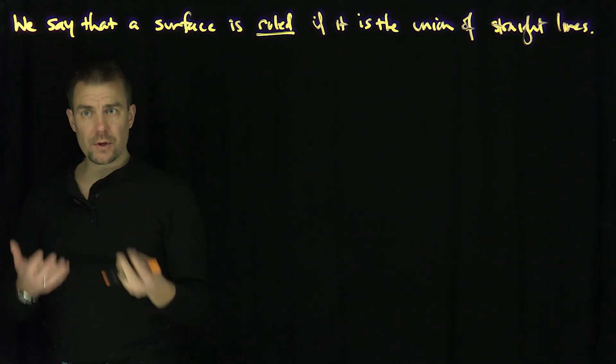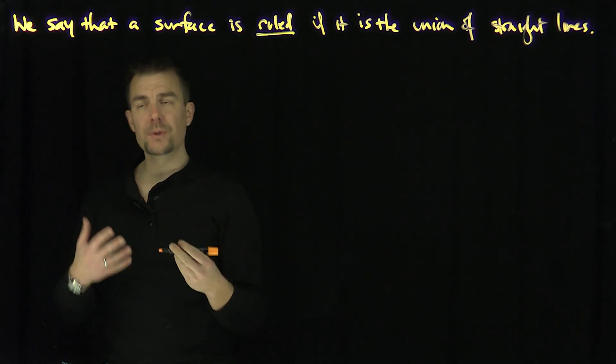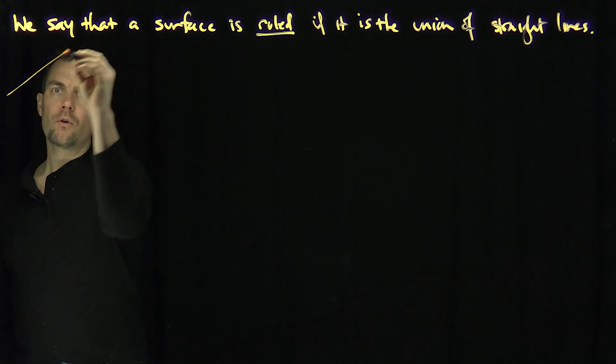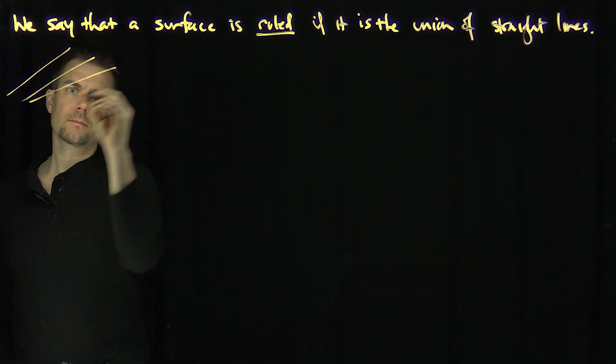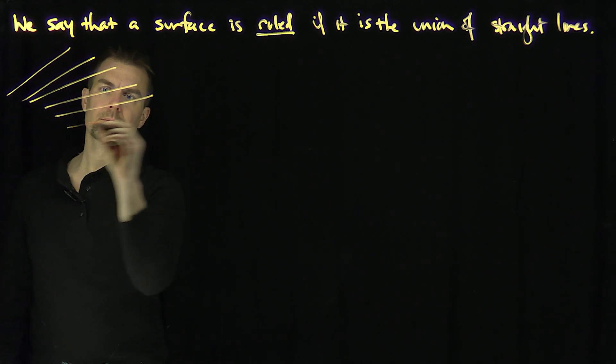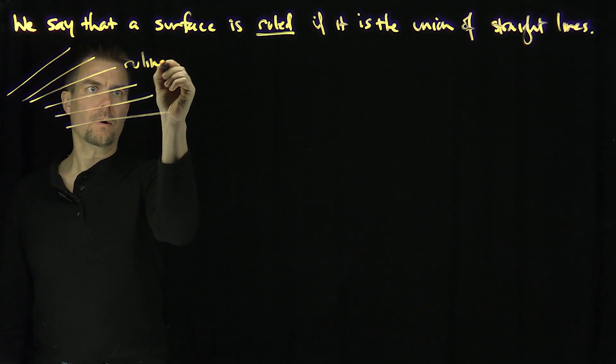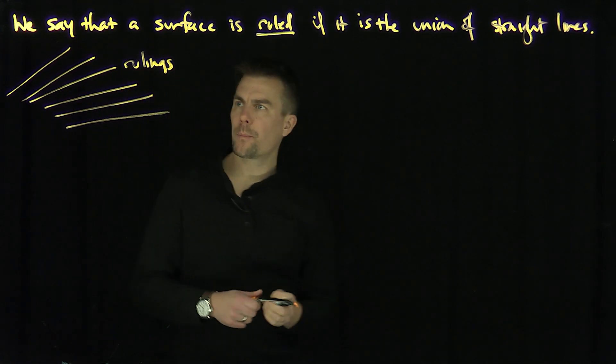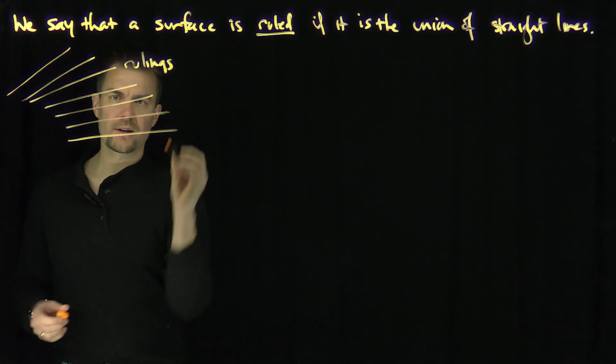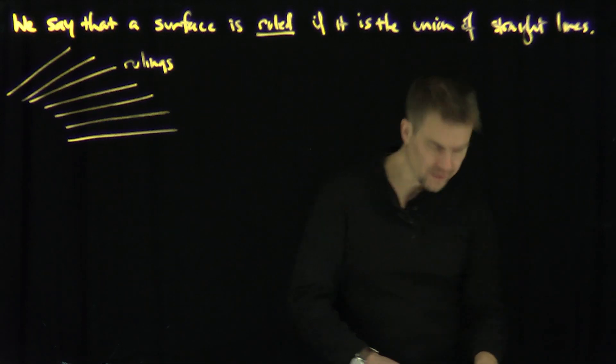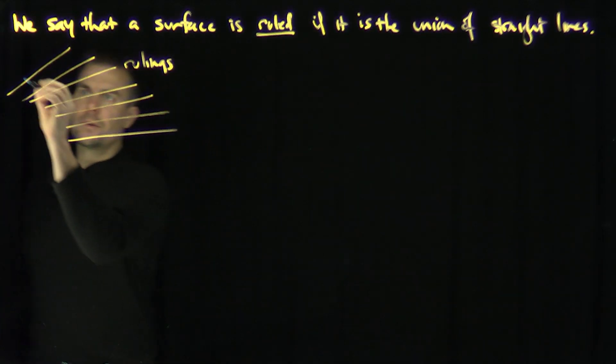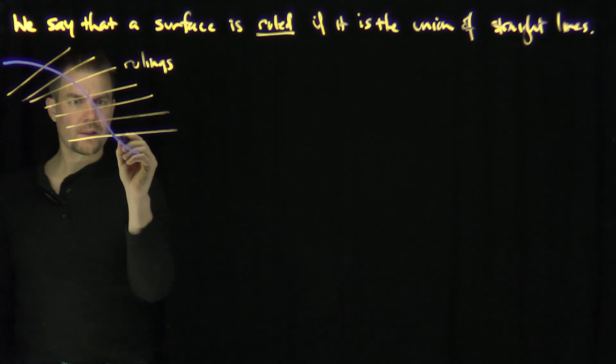Of course the classic examples of ruled surfaces are like cones and cylinders. So let's formalize what this means. If I have a whole bunch of lines like this, those are my rulings. And what I'm going to do to parameterize this ruled surface is I'm going to draw an auxiliary curve that goes through these rulings like that.